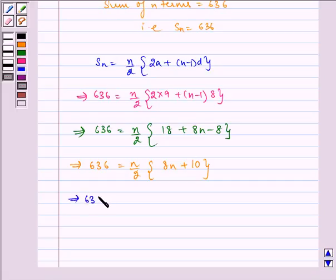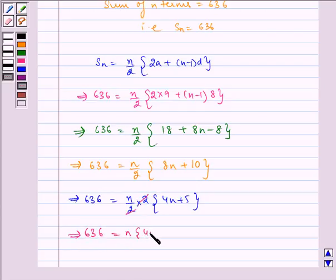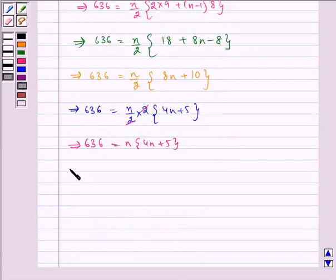Which implies 636 is equal to N by 2 multiplied by 2 times 4N plus 5. Now this 2 and this 2 gets cancelled. So we are left with 636 is equal to N multiplied by 4N plus 5, which implies 636 is equal to 4N square plus 5N.